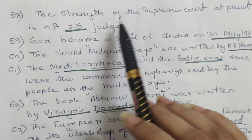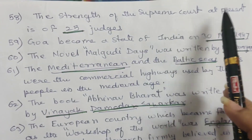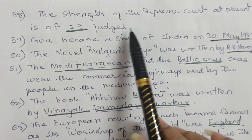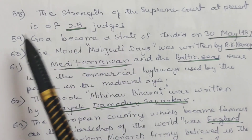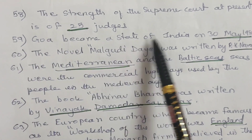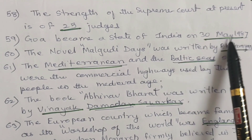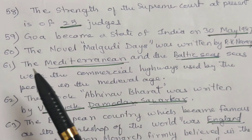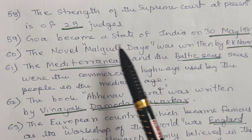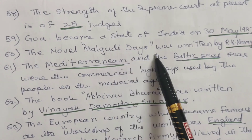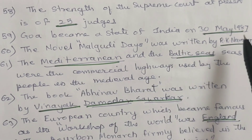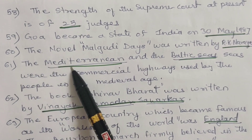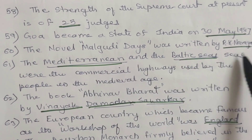58. The strength of the Supreme Court at present is 25 judges. 59. Goa became a state of India on 30th May 1987. 60. The novel Malgudi Days was written by R.K. Narayan.